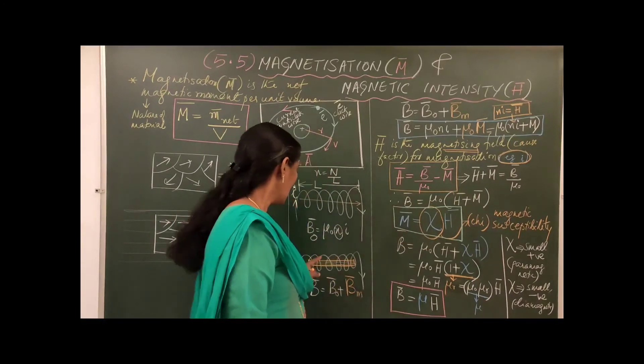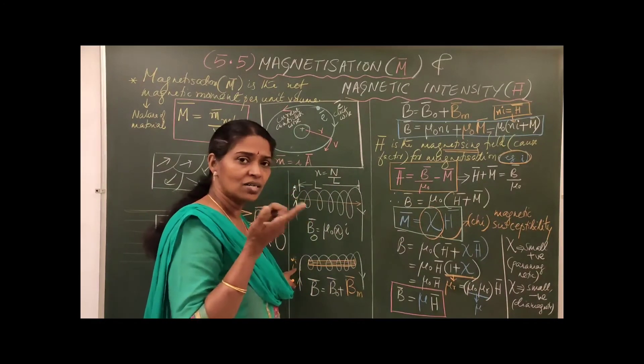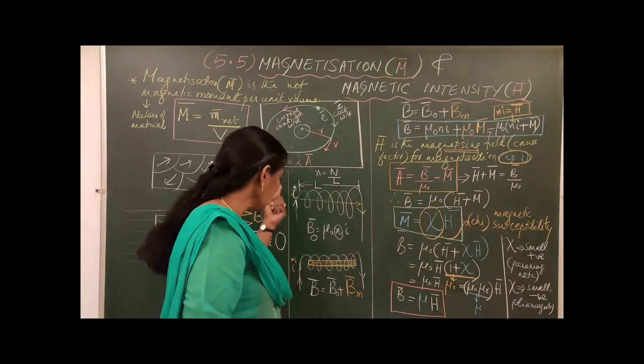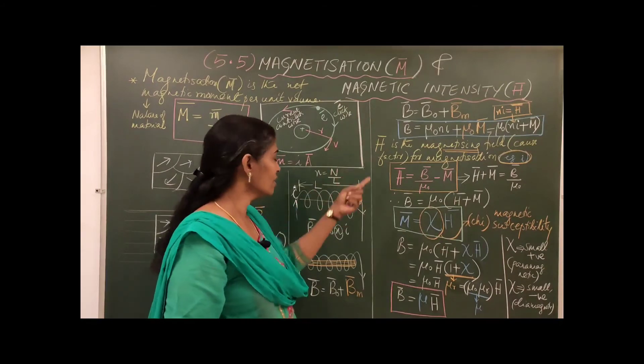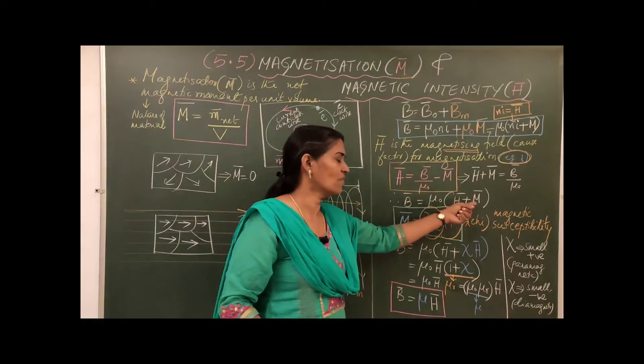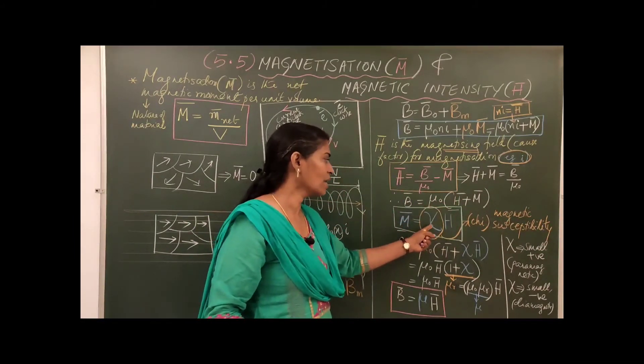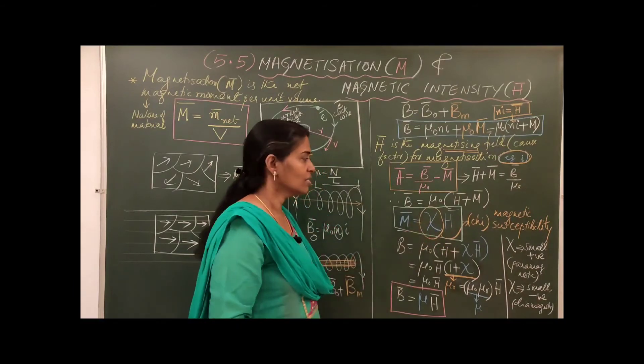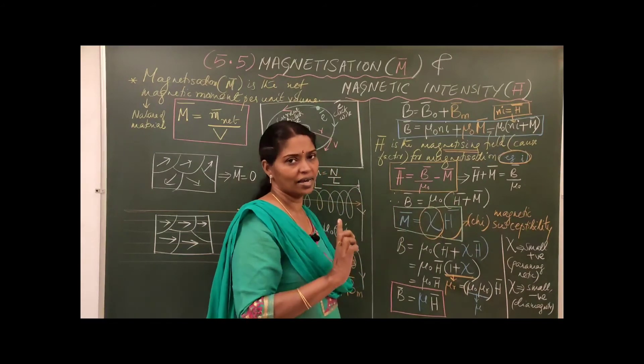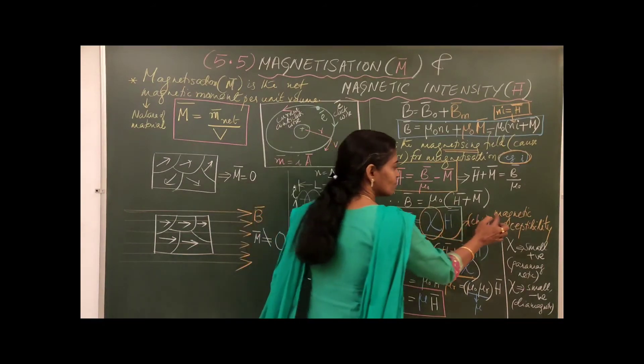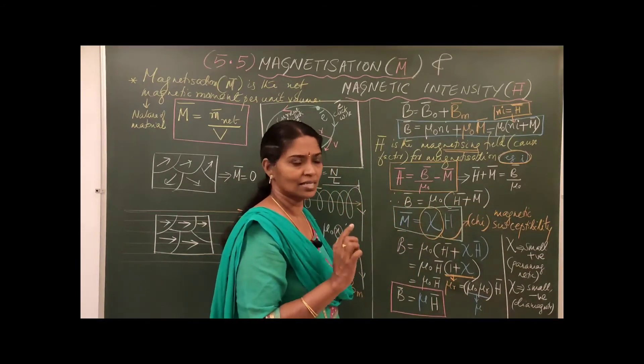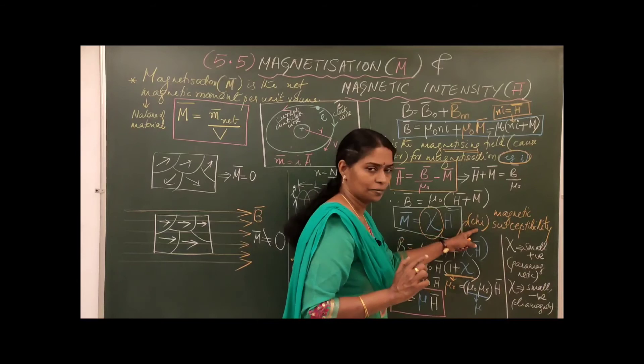Why? When you increase the current, what is going to happen? H bar going on increasing. So I increasing, H bar increasing. H bar increasing means what? M bar increasing. So it is all related. So we will say M bar is directly proportional to H bar. The proportionality constant is known as chi, C-H-I, chi, a new term, known as magnetic susceptibility. The term is magnetic susceptibility chi.